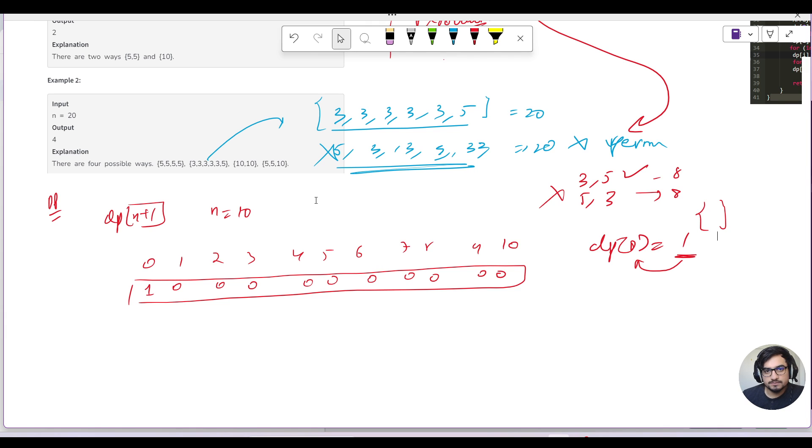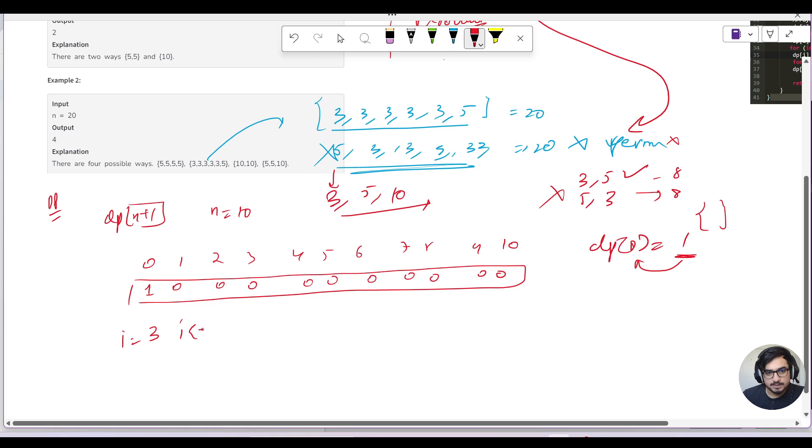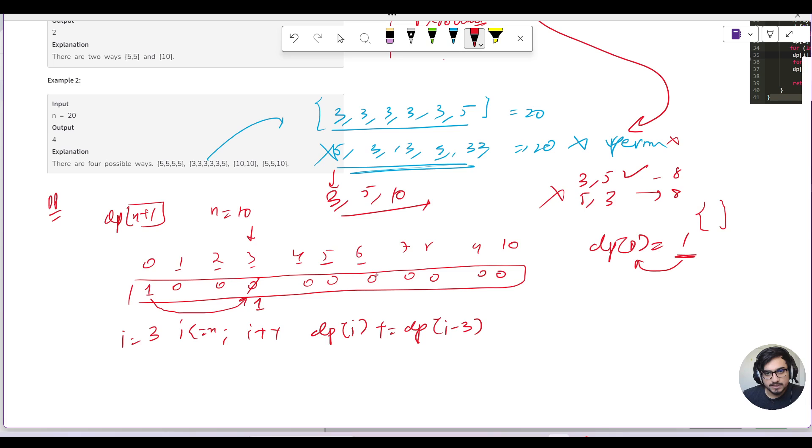Let us now start iterating for 3. First we need to complete the answer for 3, then for 5, and then for 10, to avoid the permutation forming. So we'll have a for loop going from i=3 to i<=n, i++, and we'll keep on marking as dp[i] += dp[i-3]. So we will come here and I will see 3-3=0, so I will use the answer from here and I will say this would also become 1. Similarly, for 4 I'll use the answer from 1, but eventually the overall sum would be zero. For 5, the answer would be taken from 2. For 6, the answer will be taken from 3, and this will update to 1.